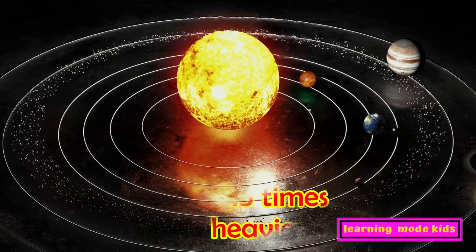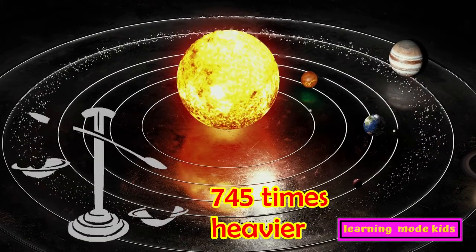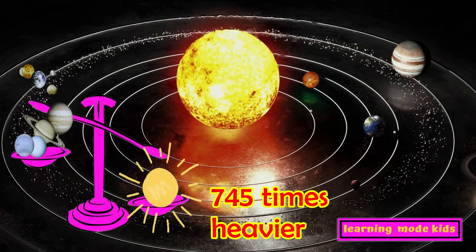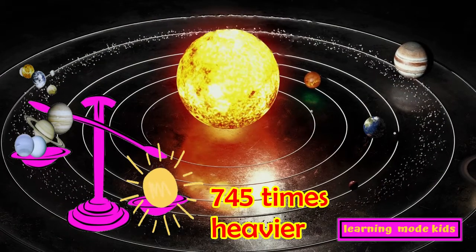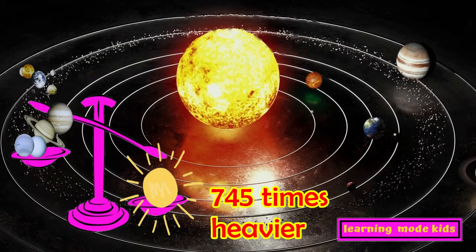The Sun is 745 times heavier than all the surrounding planets put together. And these revolve around it, attracted by its immense mass.